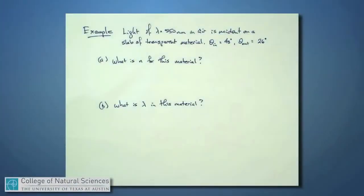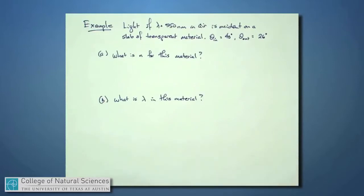I'd like to do an example now of what happens to light at a particular boundary. Here's a typical example question you might see on a test. If light of a certain wavelength, 550 nanometers, is traveling through air and is incident on a slab of transparent material such that the incident angle at the boundary is 40 degrees and the exiting angle out of the boundary is 26 degrees, then I could ask you questions like what is the index of refraction for this material and how long is the wavelength for this light in this material.